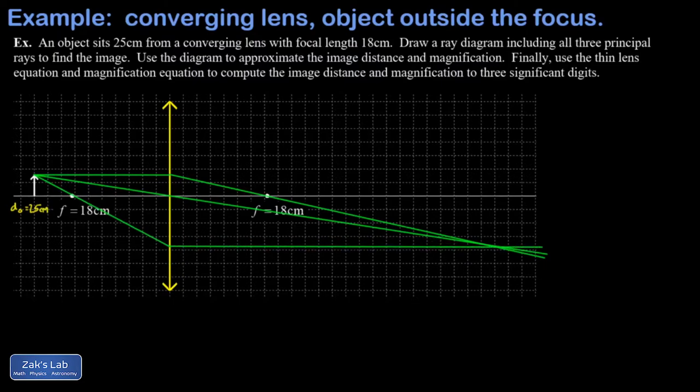We see all three rays converging to a point, so that's where the image of the arrowhead will form. On this grid, every two spaces is five centimeters, so we can count the spaces to approximate the image distance.